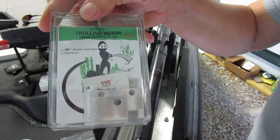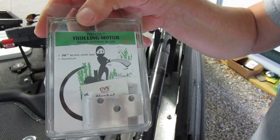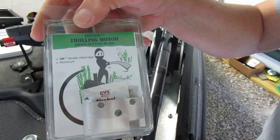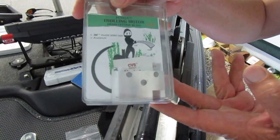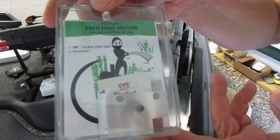This is the instructions for the new 3M tape that I'm using for the ninja grass blade. It'll come with an alcohol wipe, the 3M tape, and the blade.